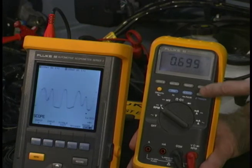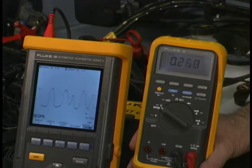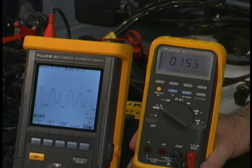You'll note when it's high, my digital reading is also high. And when the signal is low, the digital reading on the Fluke 88 shows that it is low.